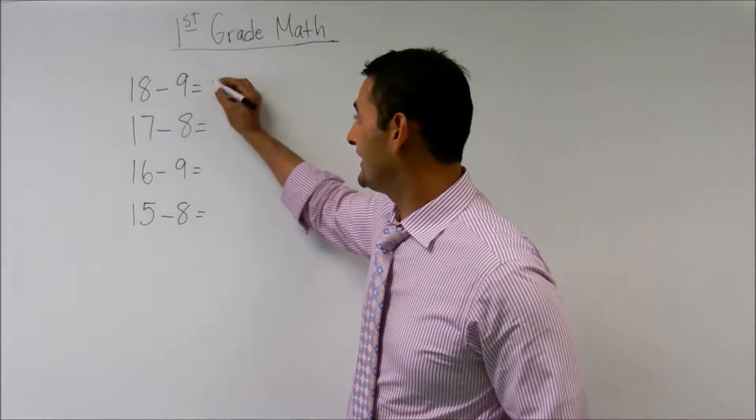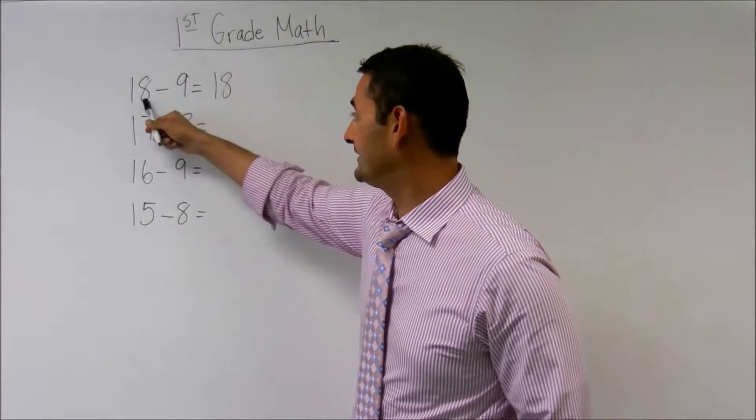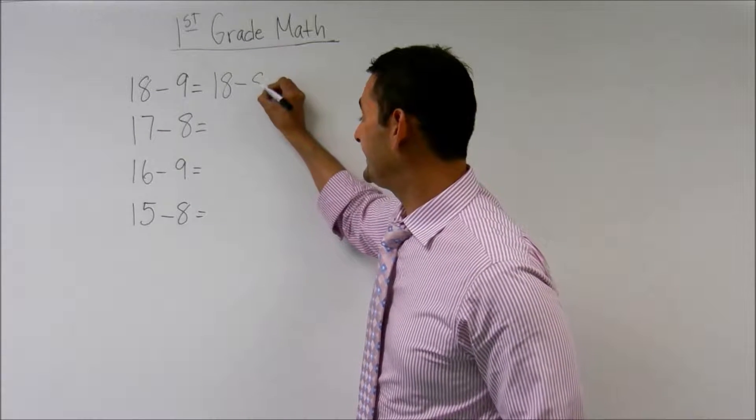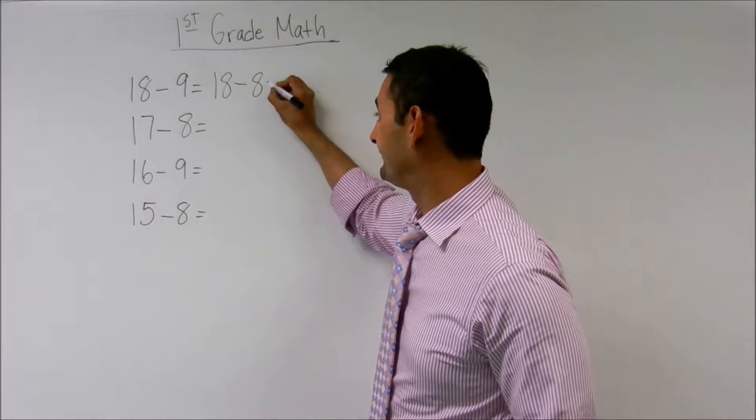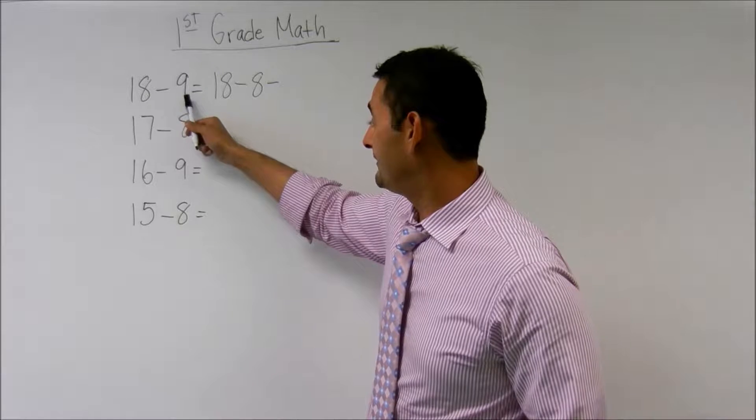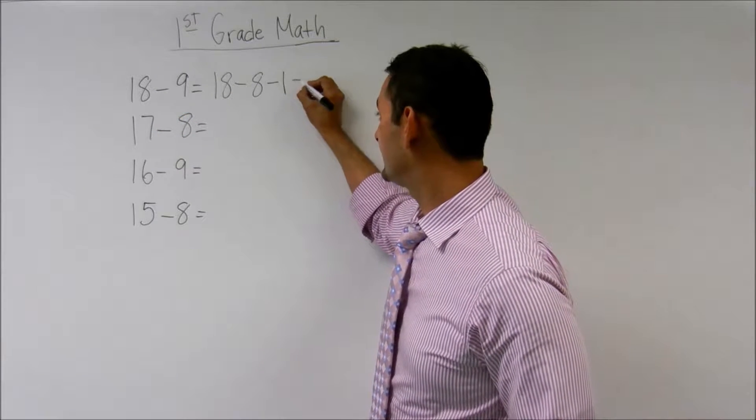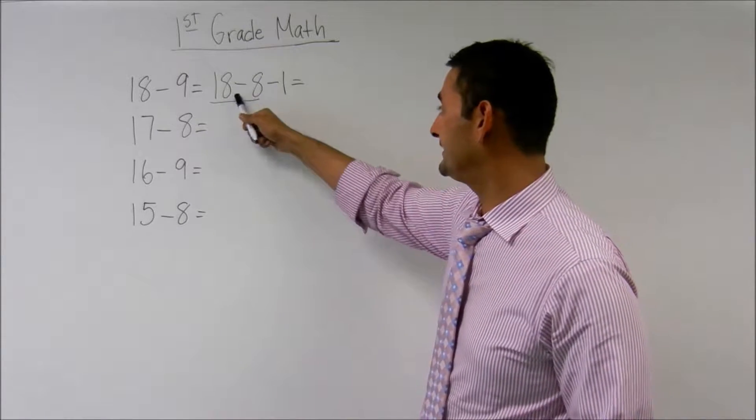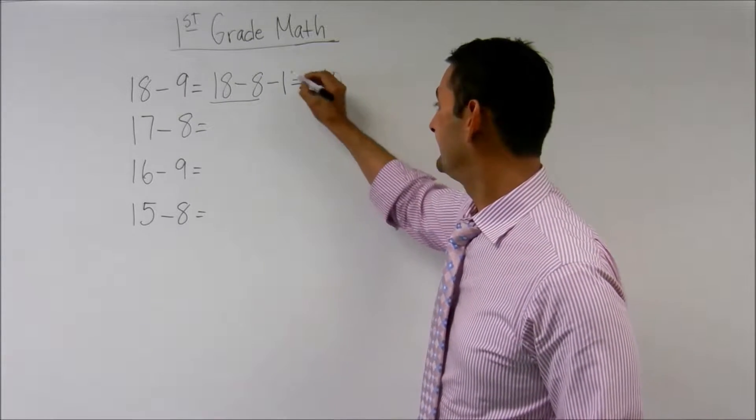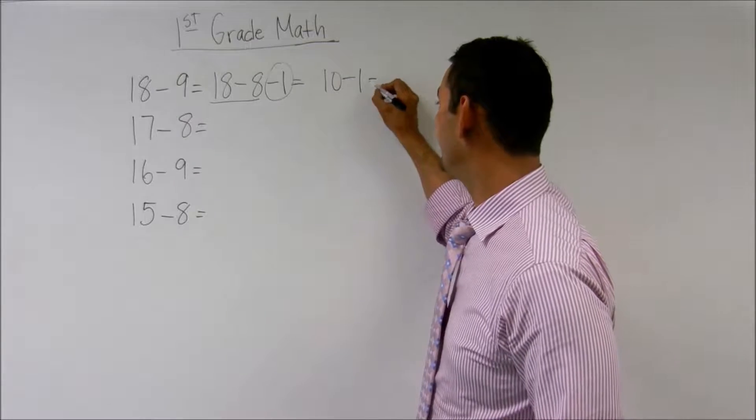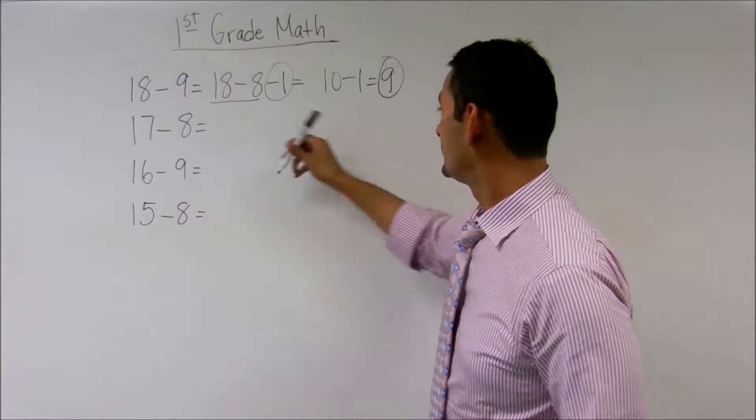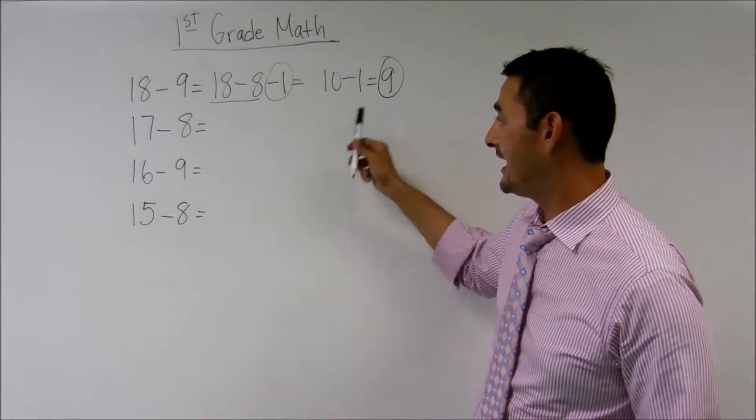Here, what I'm going to do is I'm going to take this 18. I know that 18 minus 8 equals 10. And then, because I've only got 8 here, I've got one more to take away, so that's going to be minus 1. So this part is 18 take away 8 is 10 minus 1 equals 9. So 18 take away 9 is 9.